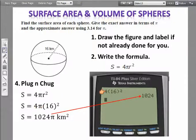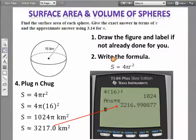See how I'm plugging it in without the pi. So my exact answer is 1024π kilometers squared. Then to get my approximation, I just take that answer of 1024 and multiply it by pi to get 3217.0 kilometers squared.